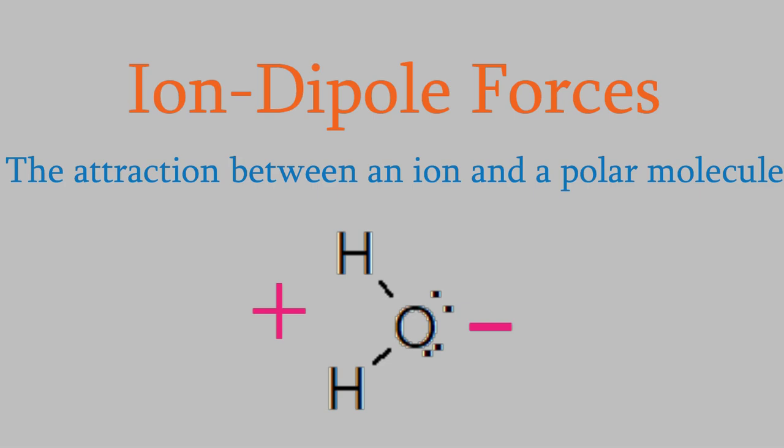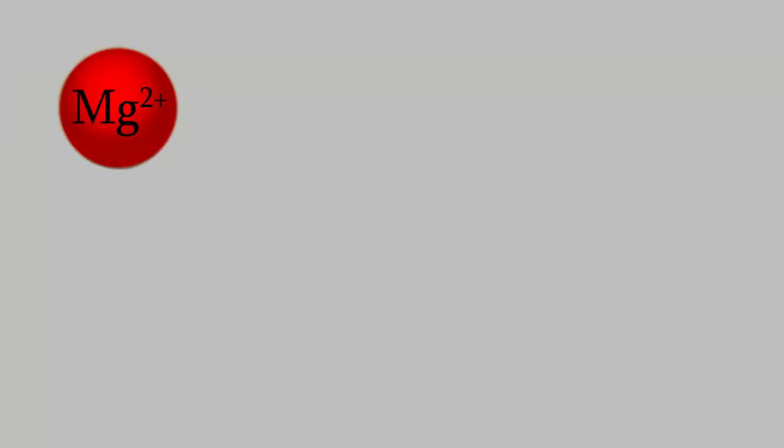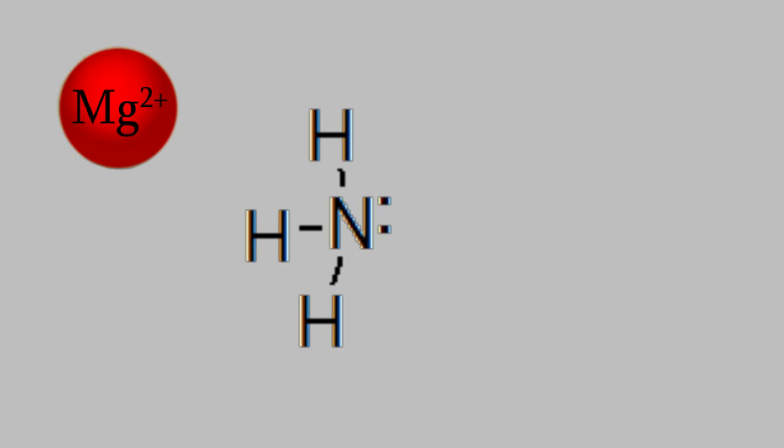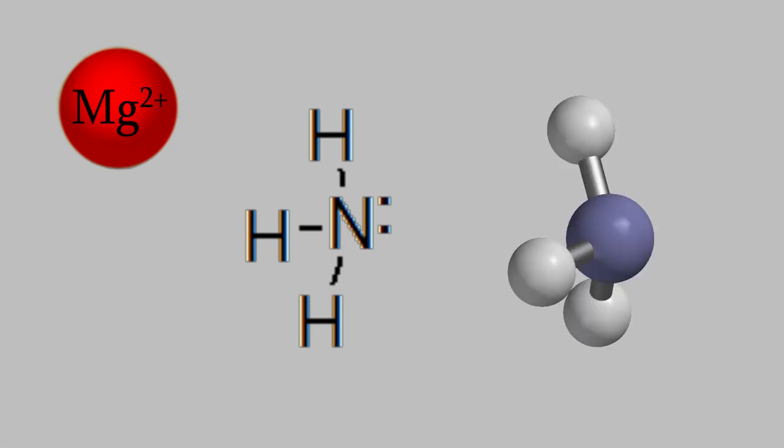It's easy to see why an ion and a dipole would be attracted to each other. For example, suppose we had a magnesium ion, which has a plus-two charge, and some ammonia molecules. If you remember what we learned about molecular geometry back in General Chem 1, you'll know that ammonia is a trigonal pyramidal molecule, which makes it asymmetric. Because ammonia is an asymmetric molecule, it's a dipole, so it has a negative side and a positive side. The negative side is this end of the molecule, since the nitrogen is more electronegative.